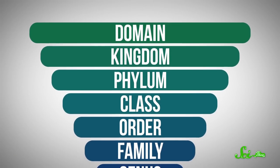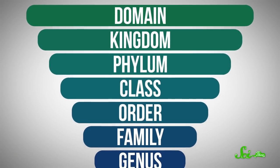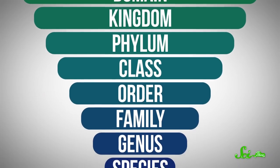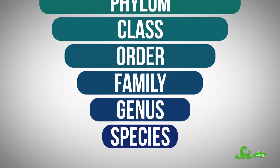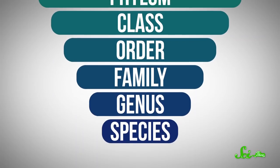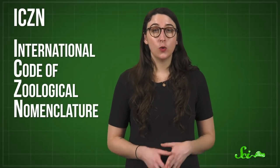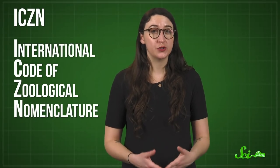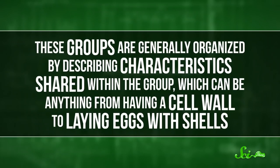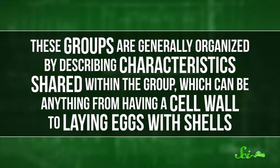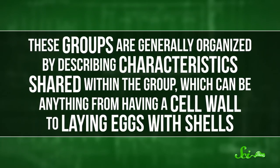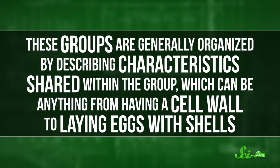It runs from the very high-level domain down through kingdom, phylum, class, order, family, genus, and species, with each describing more narrowly defined groups of related organisms. The names and naming process are regulated by international codes, like the ICZN or International Code of Zoological Nomenclature. These groups are generally organized by describing characteristics shared within the group, which can be anything from having a cell wall to laying eggs with shells.